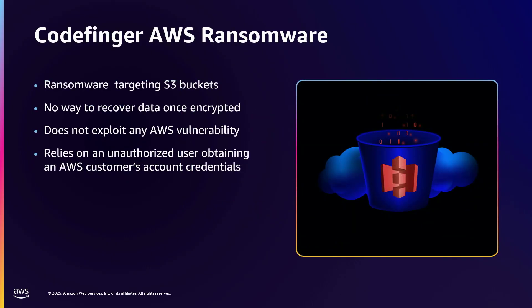The first example is our old friend ransomware. If I get access to data, the easiest and quickest way to monetize that access is to encrypt it — find it, lock it down, and have you pay me to get it back. Ransomware is often the last step in a kill chain. The data has probably been stolen already, maybe sold on the dark web. We work with organizations that have had to pay three or four separate times for one breach: to get the keys back, to prevent data from being sold on the dark web, and to prevent the incident from being reported to the news.